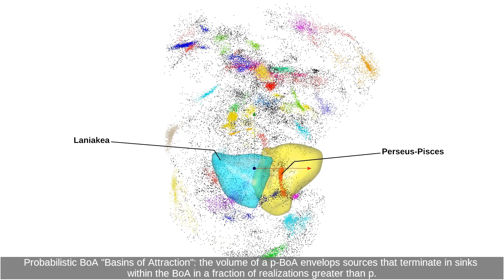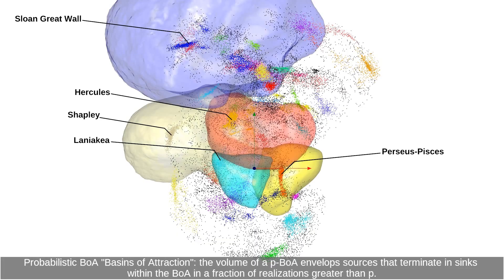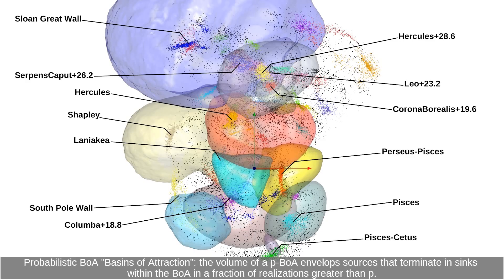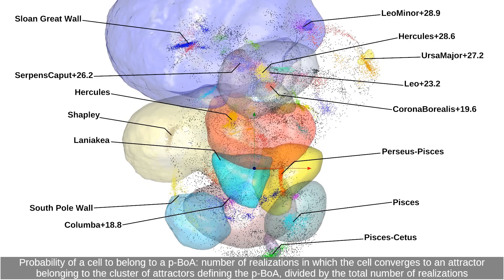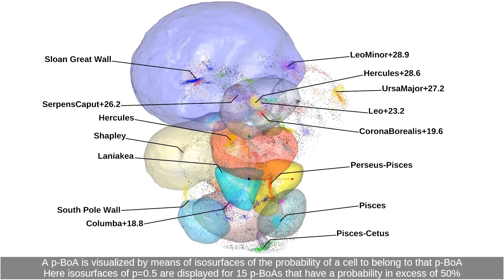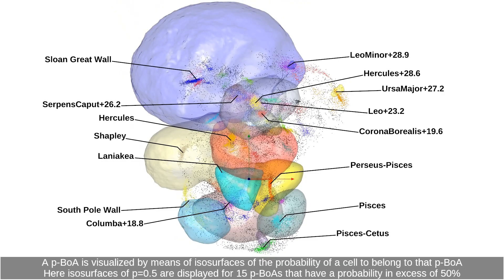Probabilistic BOA basins of attraction. The volume of a PBOA envelops sources that terminate at sinks within the BOA in a fraction of realizations greater than P. Probability of a cell to belong to a PBOA: number of realizations in which the cell converges to an attractor belonging to the cluster of attractors defining the PBOA, divided by the total number of realizations. A PBOA is visualized by means of isosurfaces of the probability of a cell to belong to that PBOA. Here, isosurfaces of P equals 0.5 are displayed for 15 PBOAs that have a probability in excess of 50%.